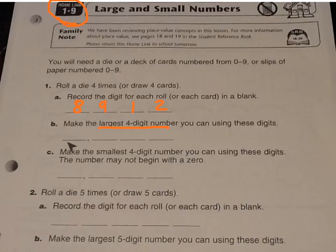For the largest place, thousands, we want the largest number, so we're going to put 9 there. In the hundreds place, we want the next largest number, which would be 8, and then so on.